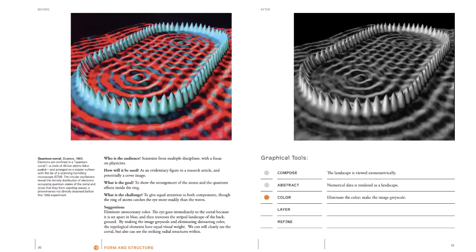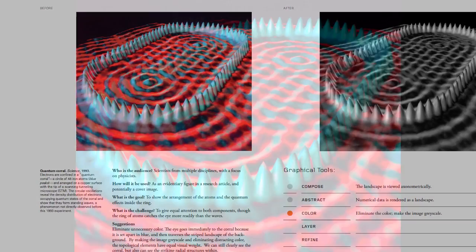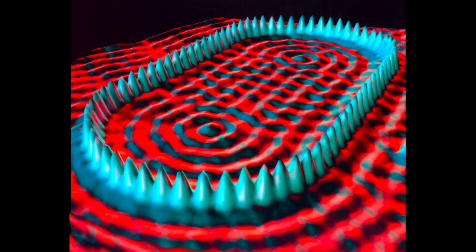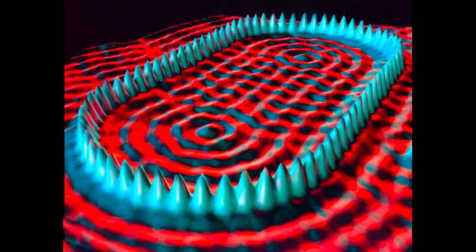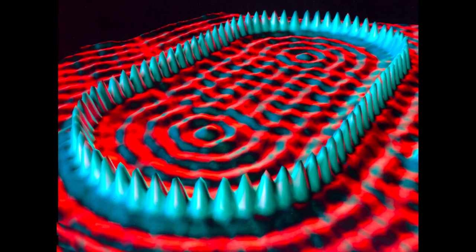On one side of the spread you have the image as it appeared in the journal, and this example is something called a quantum corral where Don Igler and his colleagues literally were able to place on a substrate a corral of atoms.